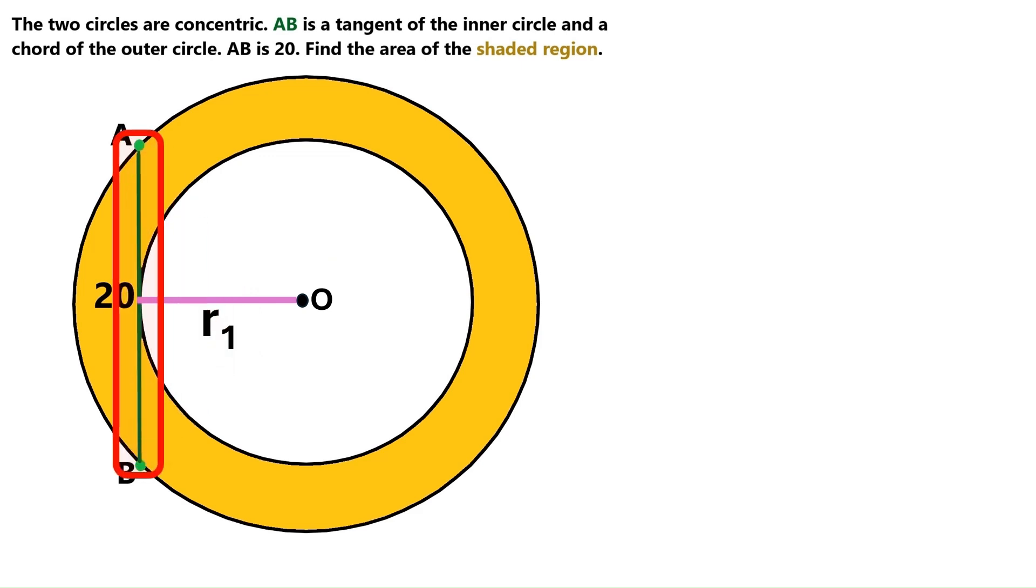AB is a tangent, and when a tangent intersects with a radius, the angle is always 90 degrees. So we know there is a right angle here. And let's draw the radius of the outer circle here and name it R2. Now, this radius R1 cuts this tangent AB into two equal parts. So this part is 10, and this part is also 10.